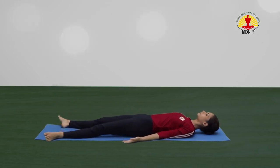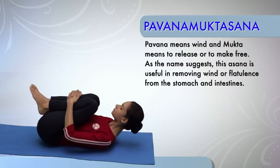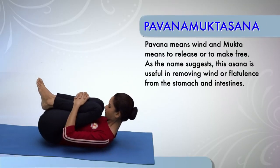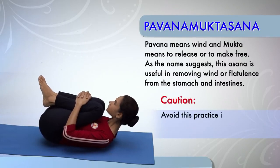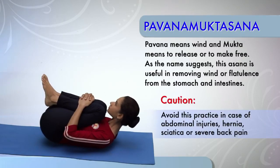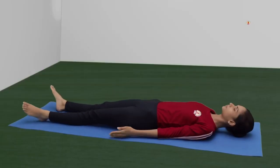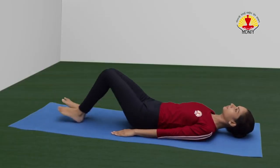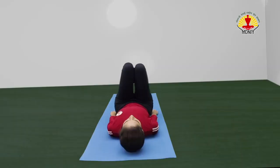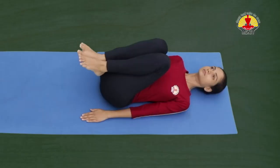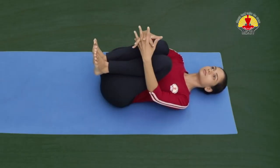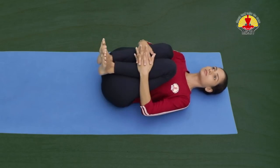Relax. Pavan Muktasana or the Wind Freeing Posture. Caution! Avoid this practice in case of abdominal injuries, hernia, sciatica or severe back pain. Lie down on the back and bend both the knees. Exhale and bring both the knees towards the chest. Inhale and interlock the fingers, clasping the shin below the knees.